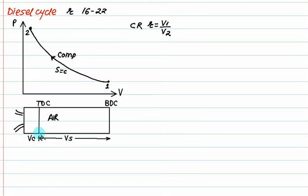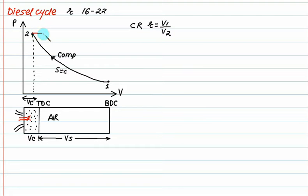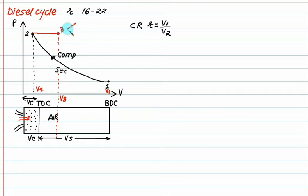At point two, when the piston reaches TDC, fuel injection starts. At TDC the entire space is filled with air — no spark plug is used, only injectors are used. The injector injects fuel, so some time is required to prepare the air-fuel mixture. Combustion then starts and completes at point three. At that interval the piston position is recorded. At point three the fuel is cut off, and at point two the fuel injection starts.